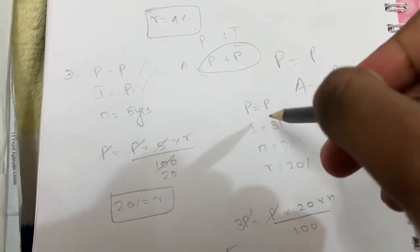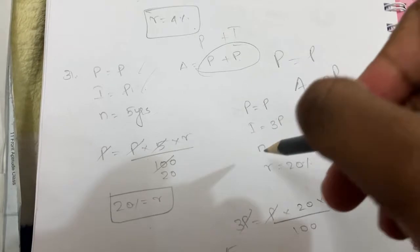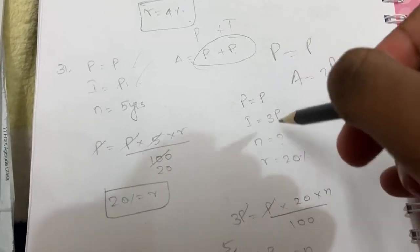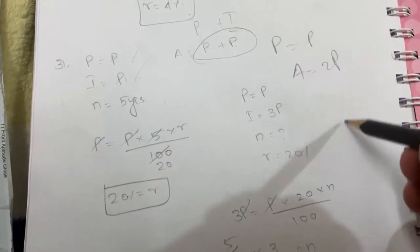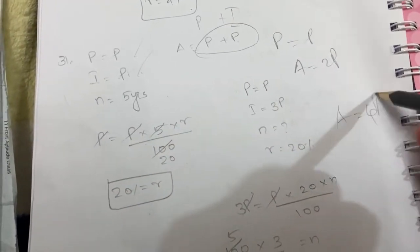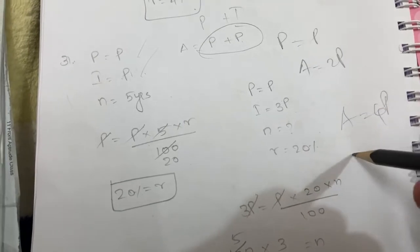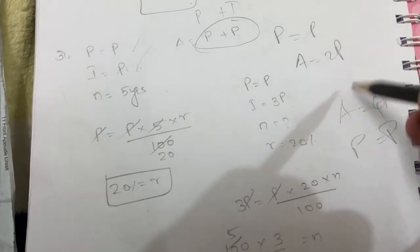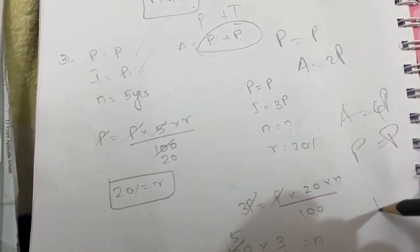Now if the amount is 4P, then interest equals 3P, with N being the number of years. That's why we compute the interest in this case separately.